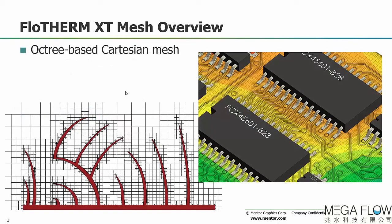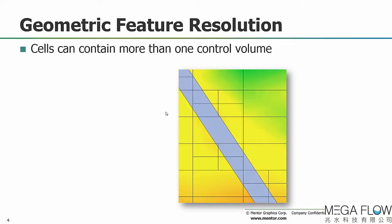Flowtherm XT uses an octree-based Cartesian mesh. The computational grid cells are rectangular — nearly square — in the computational domain. As we approach the solid geometry, these cells split: one cell becomes eight cells as we approach the geometry that needs to be resolved. Closer in, we encounter a situation where one computational grid cell contains both solid and fluid — this is called a cut cell.